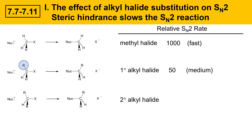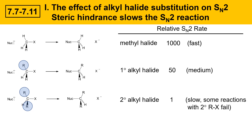Secondary alkyl halides have two R groups. Those two R groups provide even more steric hindrance, blocking the approach of the nucleophile trying to attack the carbon. For a secondary alkyl halide, the steric hindrance is even more extreme, and the relative rate is 1 — that's 1,000 times slower than the methyl halide and 50 times slower than the primary alkyl halide. Some reactions with secondary alkyl halides don't work at all.